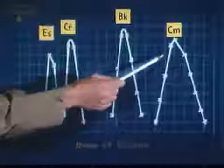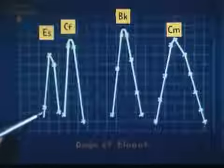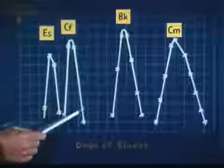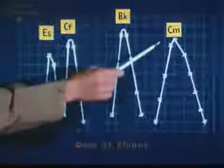When the points are connected, we have four significant peaks. The curves show us which drops contained the elements that separated in the column. From other experiments, we know that einsteinium, the element with the highest atomic number, came out in drops seven, eight, and nine. The next element, californium, was contained in drops 11, 12, 13, and 14. The element berkelium was in these drops, and curium was in these drops.